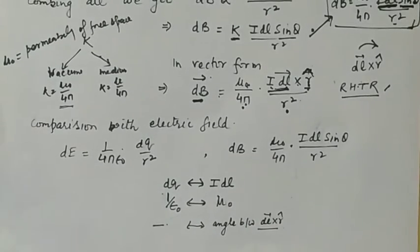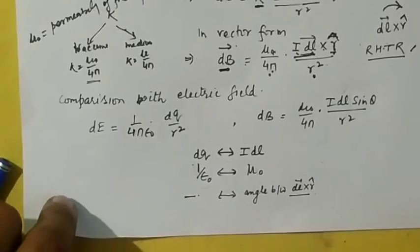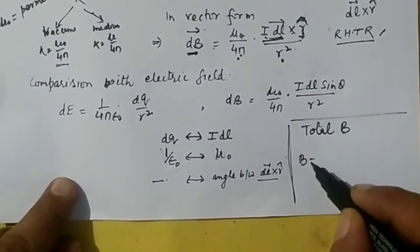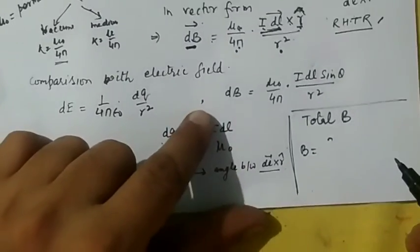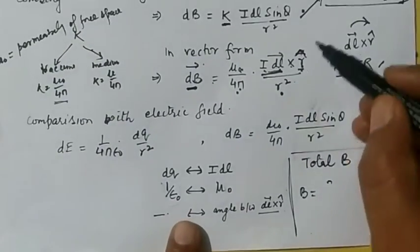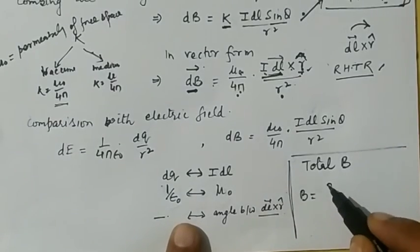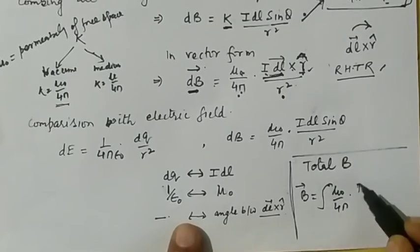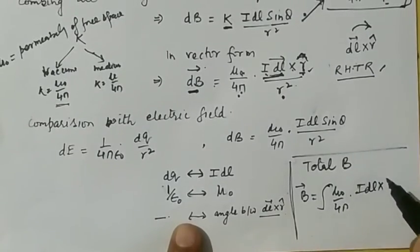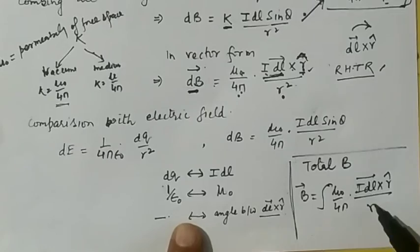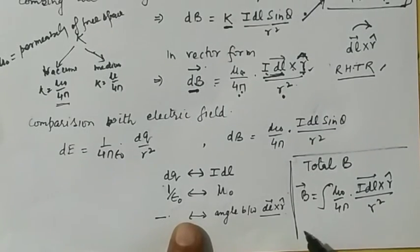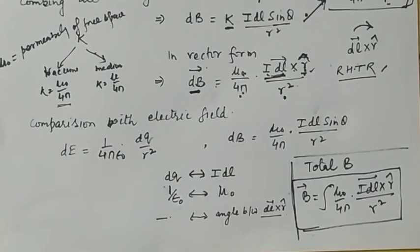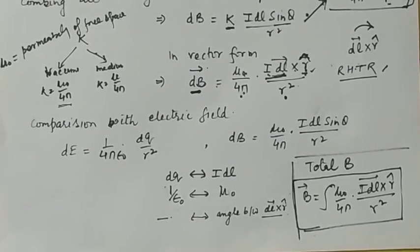To calculate the total magnetic field, we integrate the above equation. So the total magnetic field B = (mu naught / 4pi) × integral of idl cross r-hat divided by r squared. This gives the total magnetic field due to the current carrying wire at a point P.